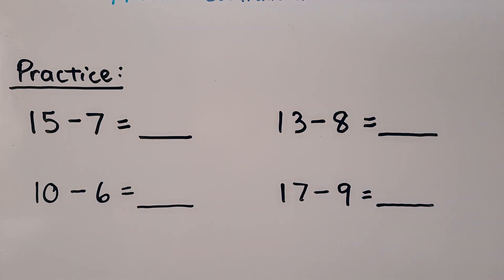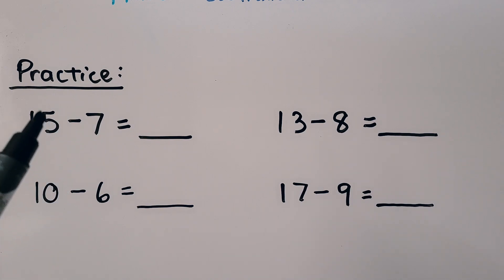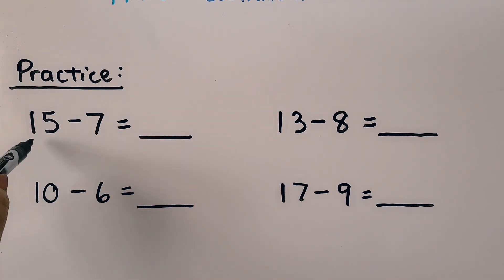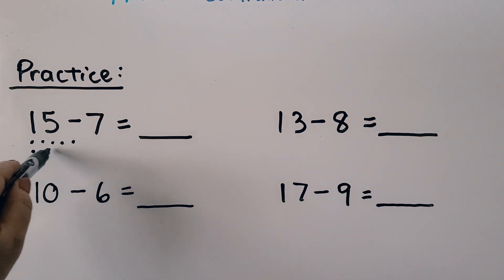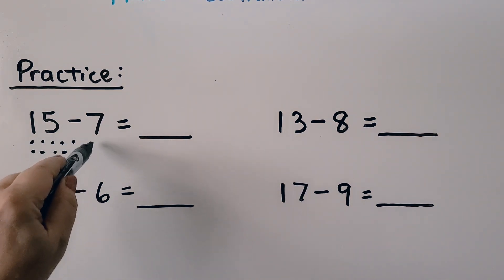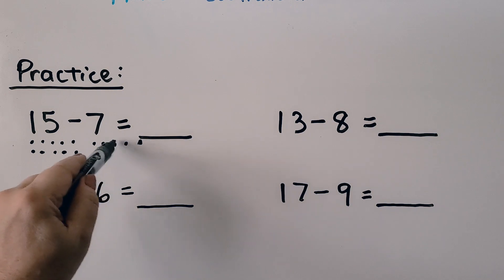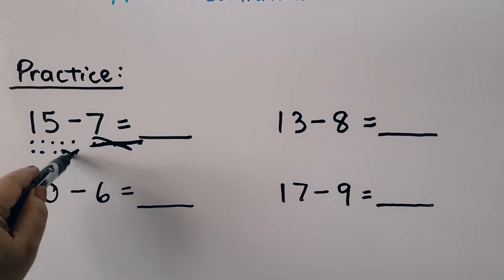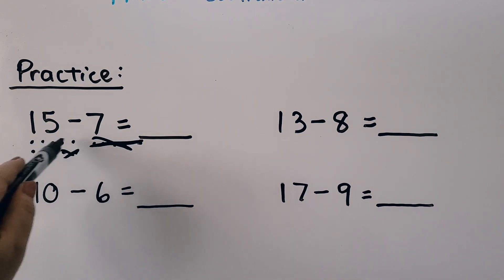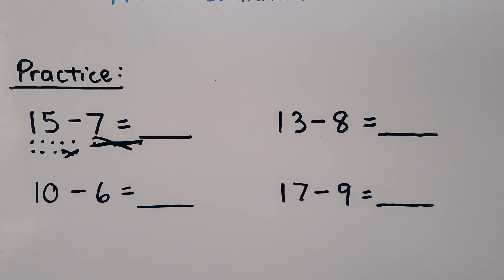Let's practice. Here we have 15 minus 7. We can start with 7 and count up to 15, or start at 15 and count back 7. We can also use counters — put 15 dots and cross out 7. We cross out 5, 6, and 7. That leaves 8. The difference is 8.